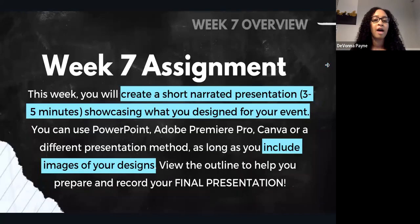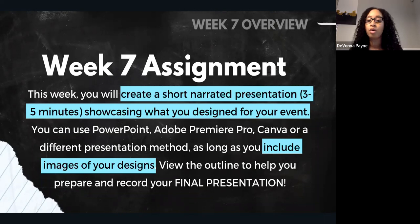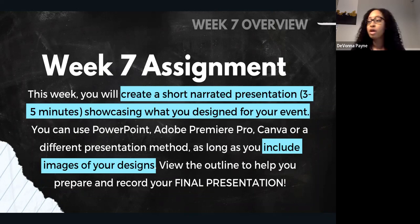Let's dive into the week seven assignment. You'll create a short narrated presentation between three to five minutes showcasing what you designed for your event. You can use PowerPoint, Adobe Premiere Pro, Canva, or a different presentation method as long as you include images of your design. You will view the outline to help you prepare and record your final presentation. I'm going to show you the outline for your presentation next.